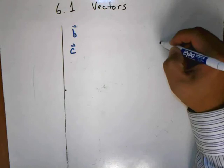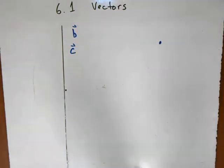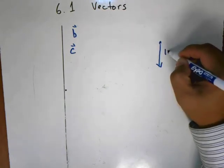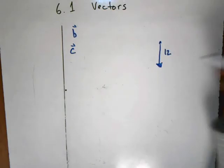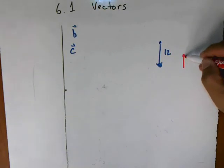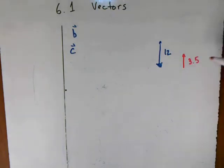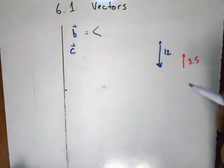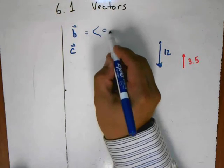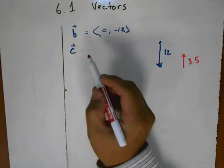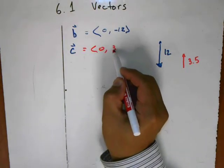The boat is going directly south at 12 miles per hour, so we could use this vector here — this is 12 and it's going directly south. The current is going in the opposite direction at 3.5 miles per hour. The horizontal component is zero because it's not going left or right at all, just up and down. So the boat vector is (0, -12) since it's going down, and the current vector is (0, 3.5).